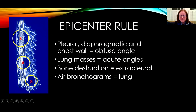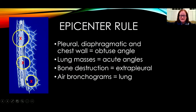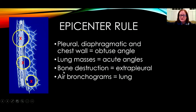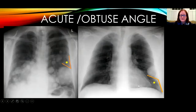Unfortunately, we often end up with a lesion that makes a 90-degree angle with the chest wall. In that situation, if there are multiple lesions I would try to characterize those, or I would look for features such as bone destruction or the presence of air bronchograms.